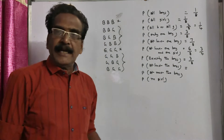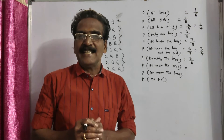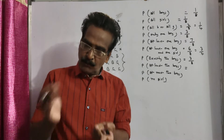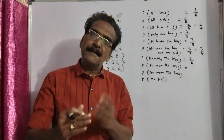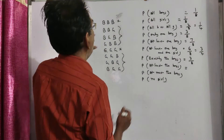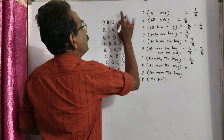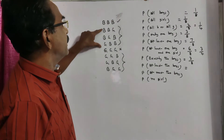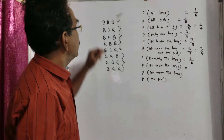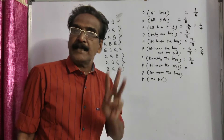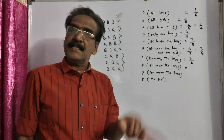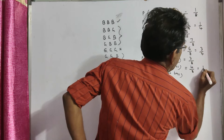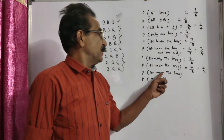Probability of at least two boys: at least two boys means exactly two boys plus three boys. The two-boys outcomes give three, and the three-boys outcome gives one more, so in total we have four outcomes. Four by eight comes to one by two is the required probability.